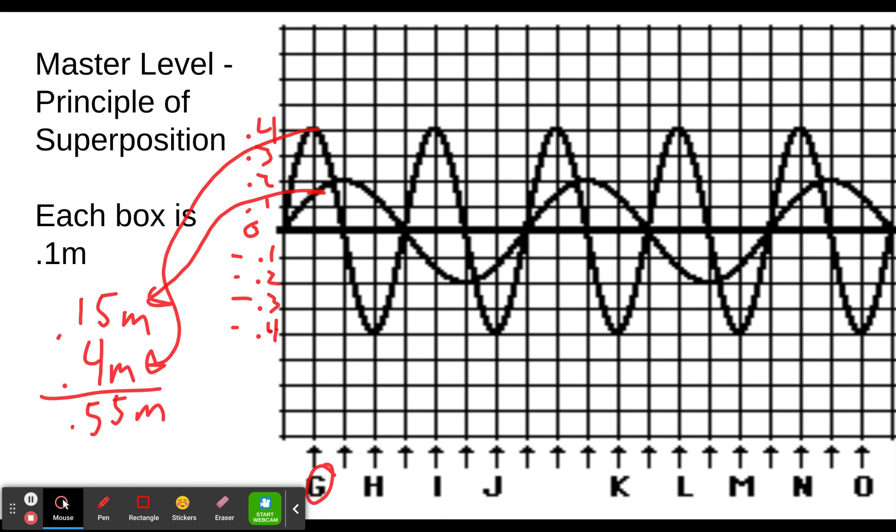Once you get to the wizard level, then it has you drag it to where it would be. Instead of giving you a number, they want you to put it on the chart. So that 0.55 would be up here. You drag it to where it should be. You don't have to be perfectly exact. If you're in the ballpark, it'll snap it to the right spot.